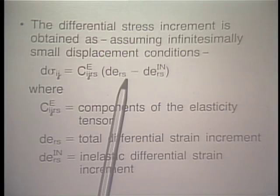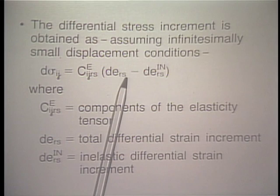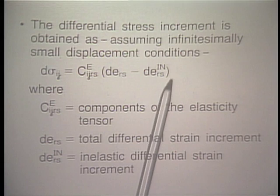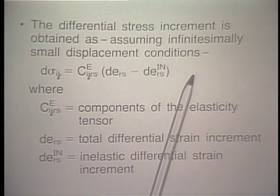Looking at the governing equation, on the left-hand side we have a differential stress increment given by the elastic constitutive tensor times the differential total strain increment minus the inelastic strain increment. This term is really the differential elastic strain increment — total strain minus inelastic strain gives us the elastic strain. This is the basic relation used in inelastic response calculations. Note that temperature effects have not been included here, which would require subtracting the differential thermal strain increment.